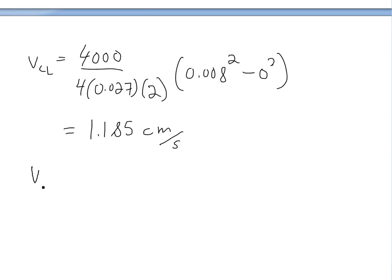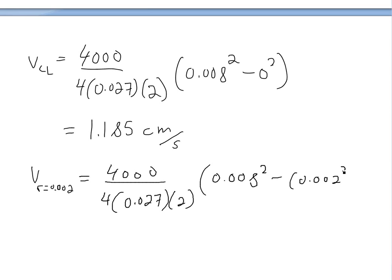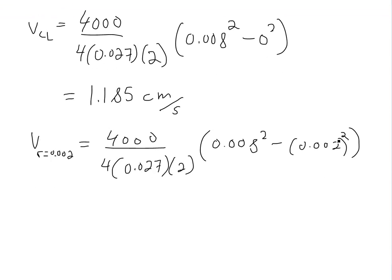For the velocity at r equals 0.002, it's the same formula but now we minus 0.002 squared. Plugging this into a calculator gives 1.111 centimeters per second. This velocity is less than the centerline velocity of 1.185, so it's slightly slower when you're further from the center.